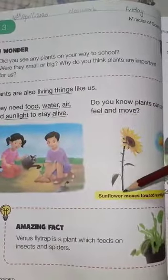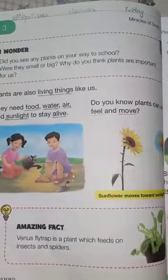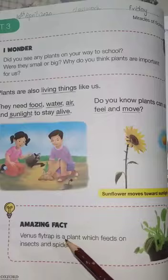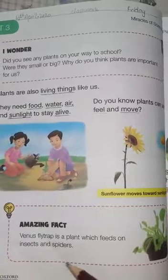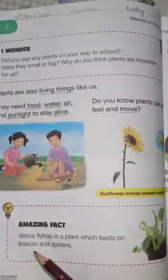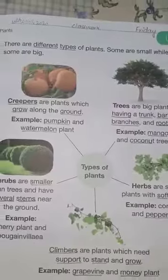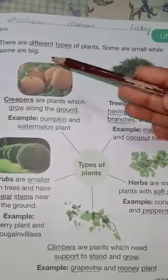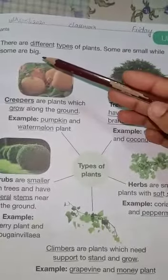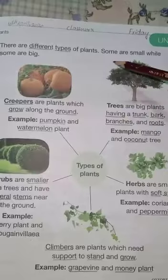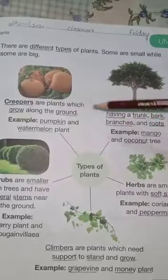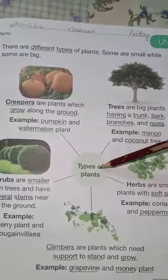The sunflower moves towards sunlight — amazing! An amazing fact: the Venus flytrap is a plant which feeds on insects and spiders. Come to the next page. There are different types of plants. Some are small while some are big.